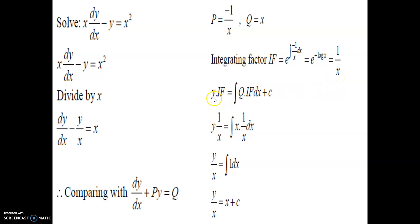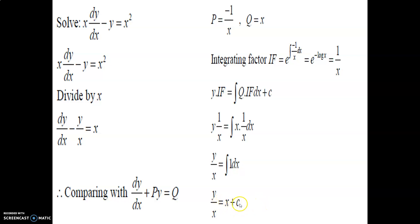The solution: y·IF = ∫(q·IF)dx + c. With IF = 1/x and q = x, we get y·(1/x) = ∫x·(1/x)dx = ∫1 dx. The integration of 1 is x, so y/x = x + c. Simplifying, the final answer is y = x² + cx.